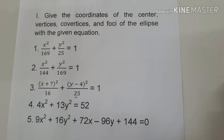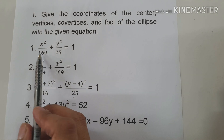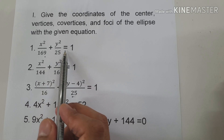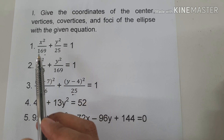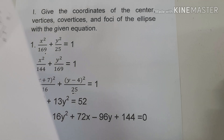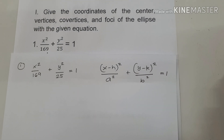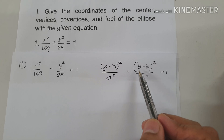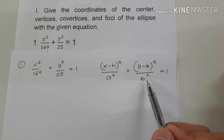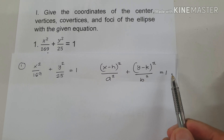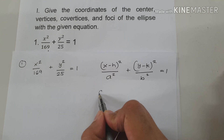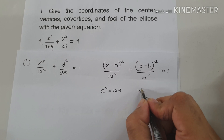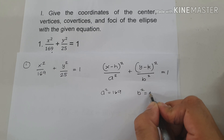For example, number 1, we have x squared over 169 plus y squared over 25 equals 1. As you can see, our equation is already written in standard form, which is (x minus h) squared over a squared plus (y minus k) squared over b squared equals 1. So the value of a squared is 169, and the value of b squared is 25.